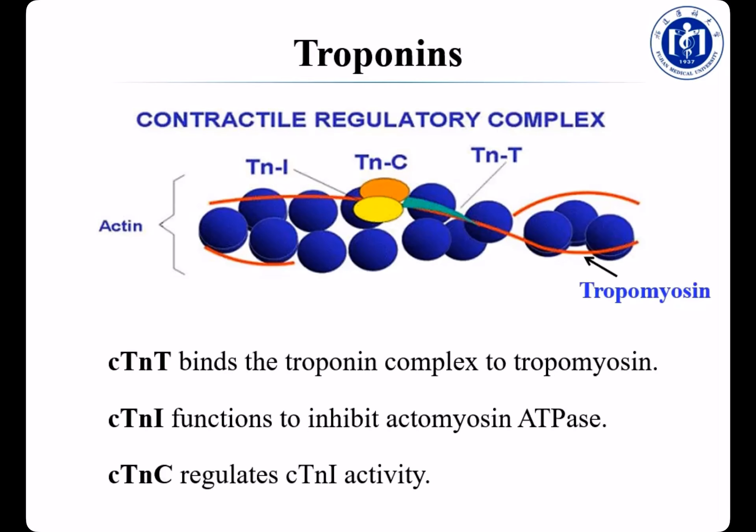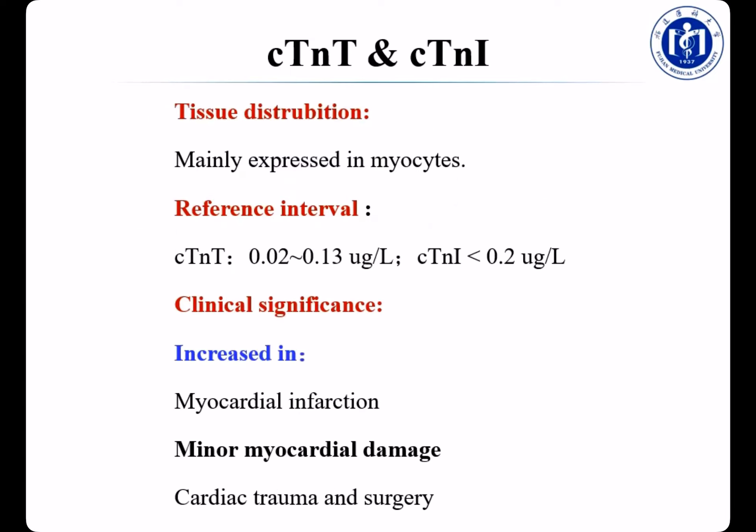Now let's turn to the proteins used for cardiac diseases. There are mainly five kinds: troponins, myoglobin, heart-type fatty acid binding protein (FABP), B-type natriuretic peptide (BNP), and N-terminal pro-BNP (NT-proBNP).